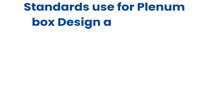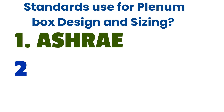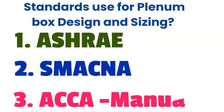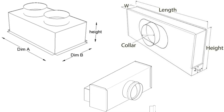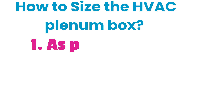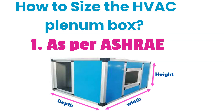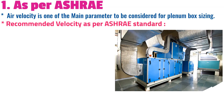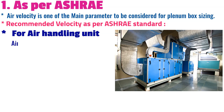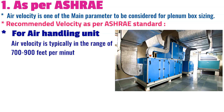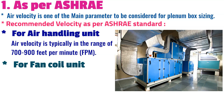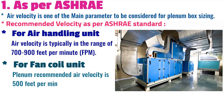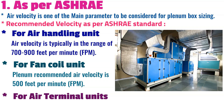The standards used for plenum box design and sizing are: 1) ASHRAE, 2) SMACNA, and 3) ACCA Manual D. For sizing using the ASHRAE standard, air velocity is one of the main parameters to be considered. The recommended velocities are: for an air handling unit, air velocity is typically in the range of 700 to 900 feet per minute; for a fan coil unit, the recommended air velocity is 500 FPM; and for air terminal units, the recommended air velocity is 350 to 500 FPM.